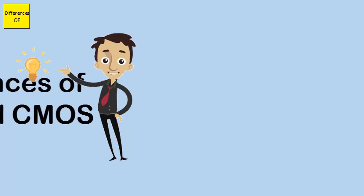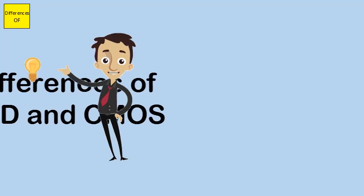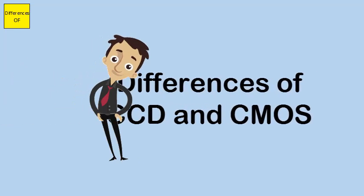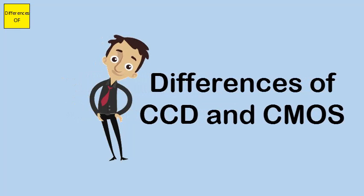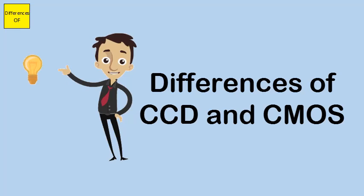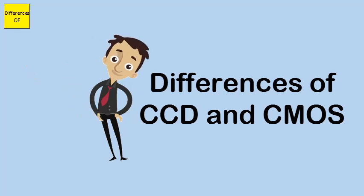Difference between CCD and CMOS. CCD stands for charge-coupled devices. CMOS stands for complementary metal oxide semiconductor.